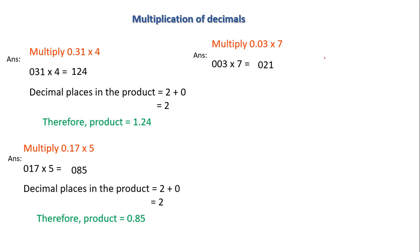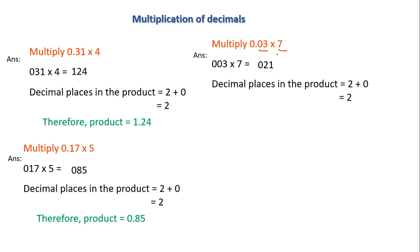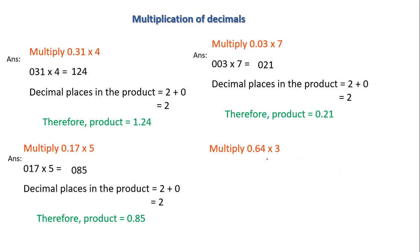Next, I find the number of decimal places in the product. In the first number it is 2; in the second number it is 0. So decimal places in the product equals 2 plus 0, which is 2. Converting 021 to two decimal places gives 0.21.